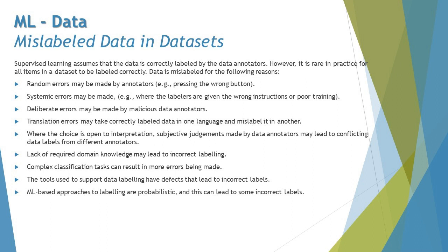Tools used to support data labeling may have defects that lead to incorrect labels. If an AI-based labeling tool has an unknown or ignored defect, its outputs can also be wrong. Additionally, ML-based approaches to labeling are probabilistic, meaning they are not 100 percent accurate, so some incorrect labeling will occur — and that can result in downstream failures in the trained model.